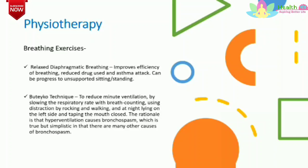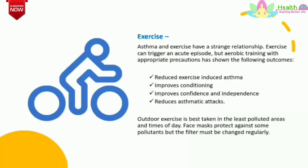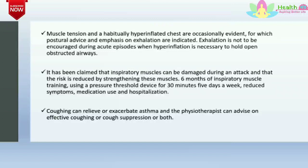Exercise training in asthma. Asthma and exercise have a complex relationship. Exercise can trigger an acute episode, but aerobic training with appropriate precautions has shown the following outcomes: it reduces exercise-induced asthma, improves conditioning, improves confidence and independence, and reduces asthmatic attacks. Exercise is best taken in the least polluted areas and times of day. Face masks protect against some pollution but filters must be changed regularly. Six months of inspiratory muscle training using a pressure threshold device for 30 minutes, 5 days a week, reduces symptoms, medication use, and hospitalizations.